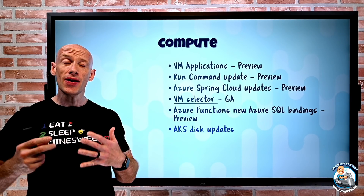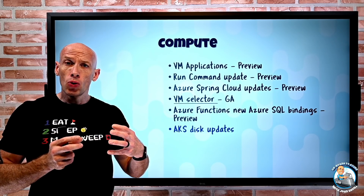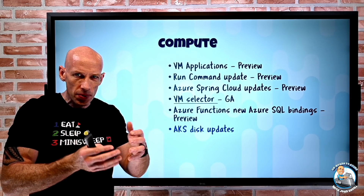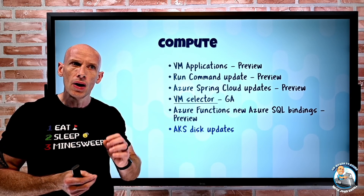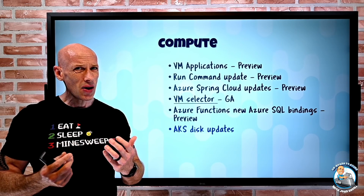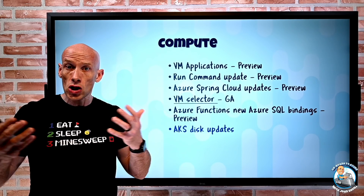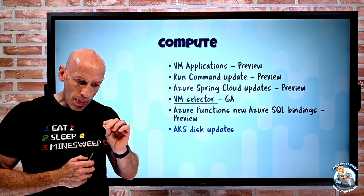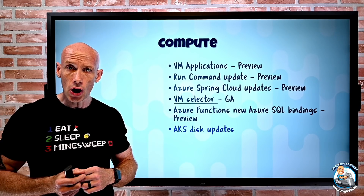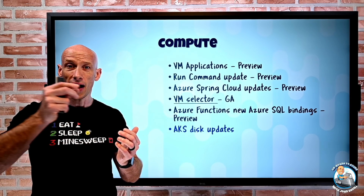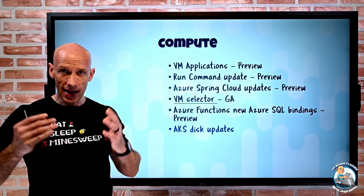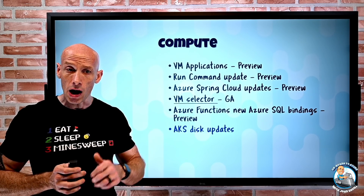Azure Kubernetes Service has some nice disk updates. Typically we have multiple nodes and a pod runs on one of those hosts using a managed disk for a persistent volume claim. If something happens to that host, the pod has to start on a different node and it takes time for that disk to connect. Now there's a shared capability from the managed disk — a disk will be connected to multiple nodes in the AKS cluster, so if there is a failover it doesn't waste time on disk connection. There's now support for ZRS disks in GA, and the shared capability works with both LRS and ZRS. Azure Files NFS is also now supported on AKS in GA.